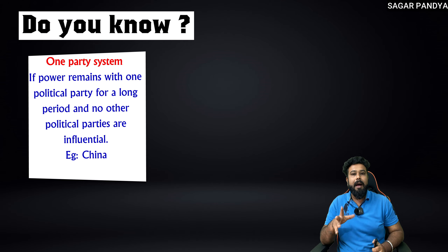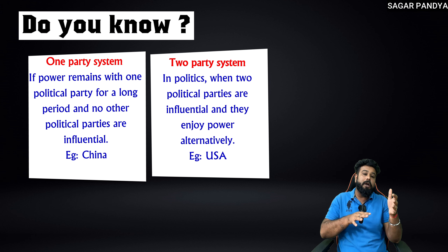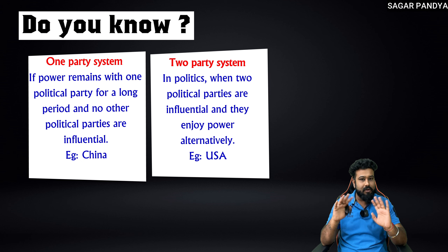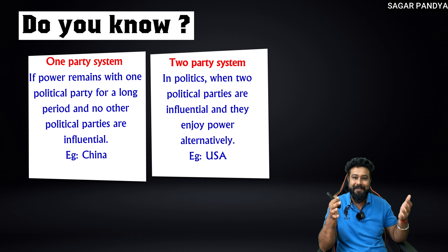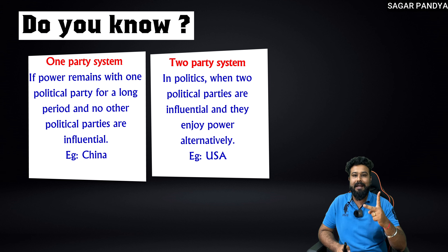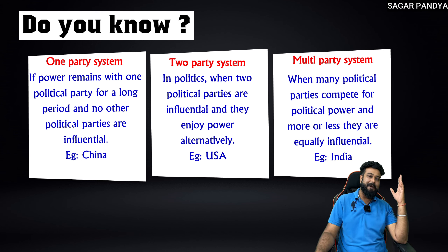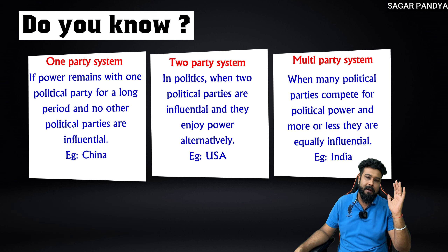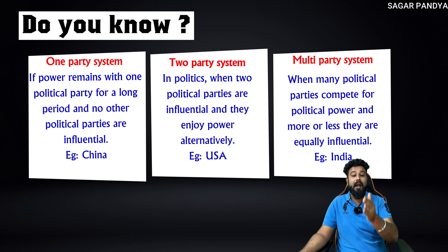In the USA, there are two parties — so that is called a two-party system. Two party system means that in politics, when two political parties are influential and enjoy power alternatively, it is called two-party system. The best example is USA, with Democrats and Republicans. The third type is not a three-party system but a multi-party system. Multi-party system means when many political parties compete together for political power and are more or less equally influential. India is the best example of a multi-party system.